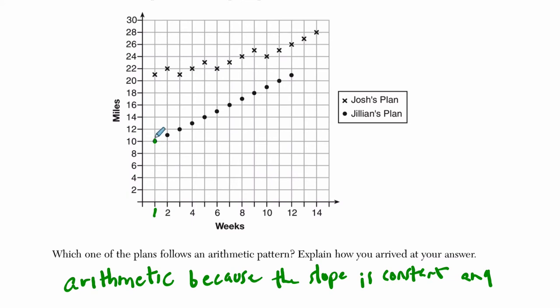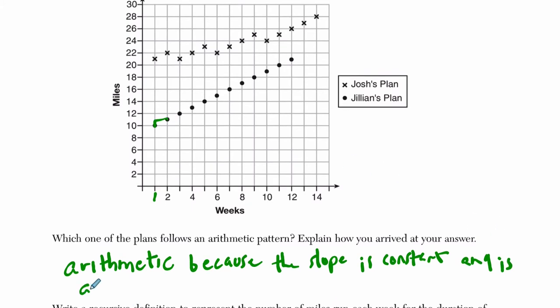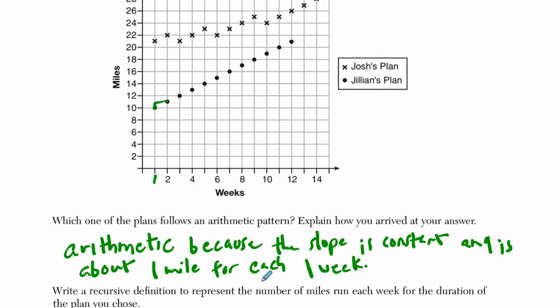Here, my rise is one about and then over one. So it's about one mile every one week. And is about one mile for each one week. It's a one for one slope about, and that's constant throughout. Every time we go up one mile, that's for each week. Up one mile for each week. It's constant throughout, hence the fact that it forms a line here.